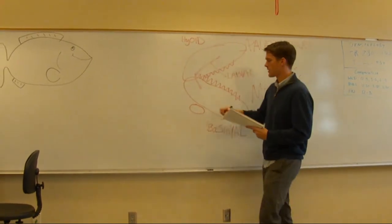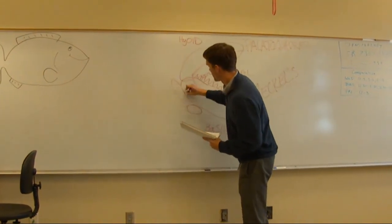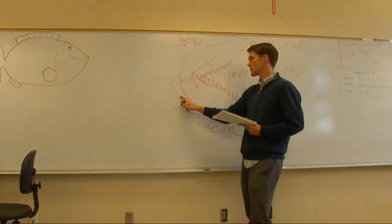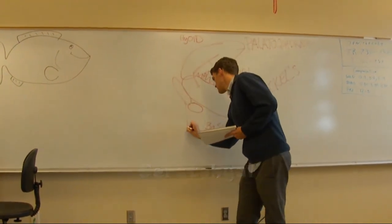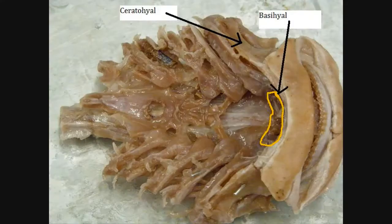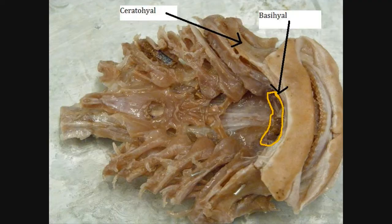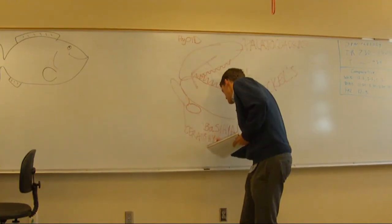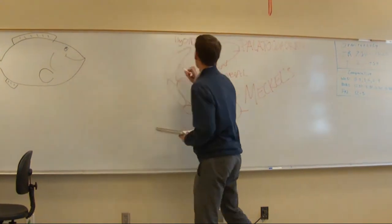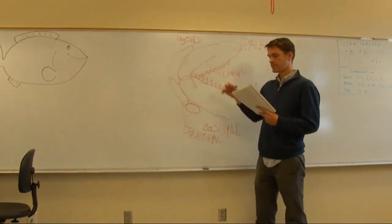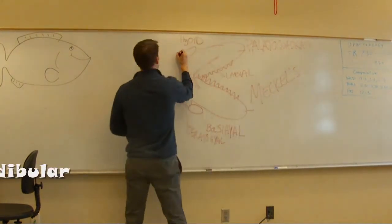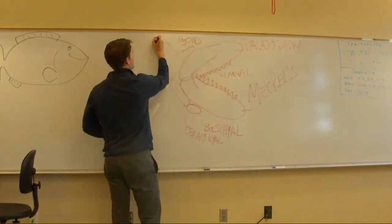Okay, and then connecting with that, we're running right underneath the mental cartilage, which is the cerato-hyo. And then behind the palatal quadrate is the hyo-mandibular.